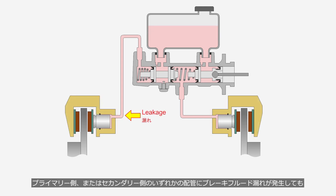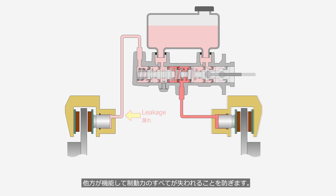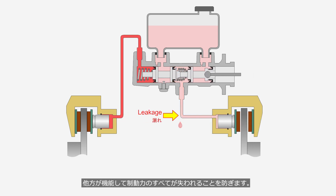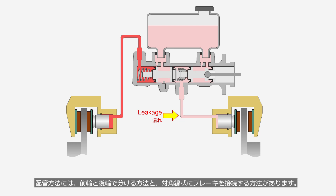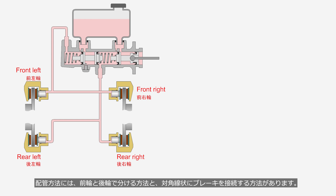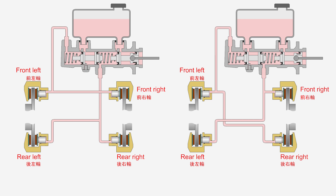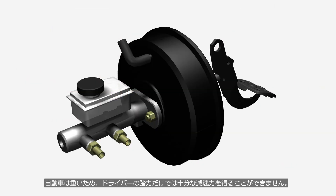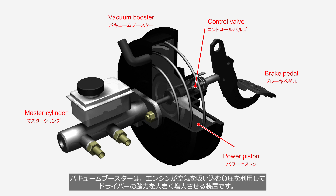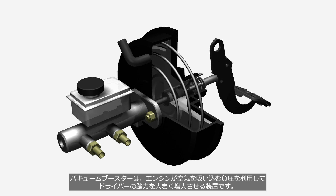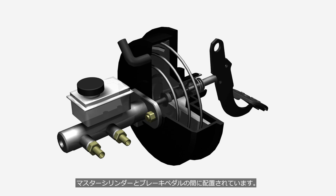Even if a brake fluid leak occurs in either the primary or secondary circuit, the other side will still function, preventing the total loss of braking power. There are two methods of brake connection: one that separates the front and rear brakes, and another that connects the brakes diagonally. In vehicles with a heavy front-wheel load, such as front-engine front-drive vehicles, diagonal connections are commonly used. Because automobiles are heavy, the driver's pedal force alone is insufficient to achieve significant braking force. The vacuum booster is a device that significantly amplifies the driver's pedal force, using the negative pressure generated when the engine sucks air. It is positioned between the master cylinder and the brake pedal.